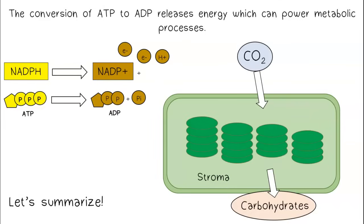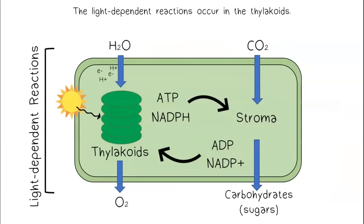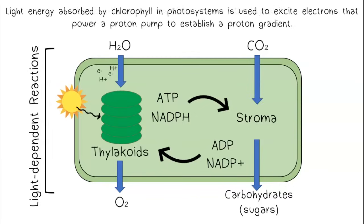Let's summarize what we've learned. The light-dependent reactions occur in the thylakoids. Light energy absorbed by chlorophyll in photosystems is used to excite electrons to power a proton pump to establish a proton gradient.